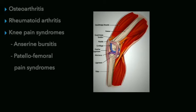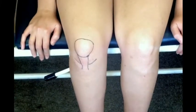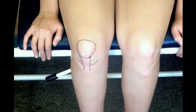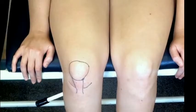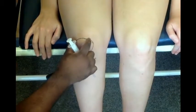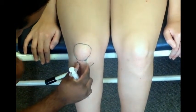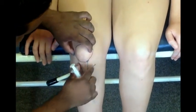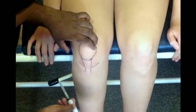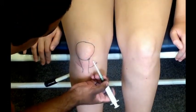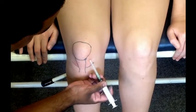Patients frequently present to primary care facilities with knee complaints. Osteoarthritis and rheumatoid arthritis are among the most common, and along with knee pain syndromes, are indications for intra-articular injection. Compared to the other joints, the knee is relatively easy to access and can be approached by two methods. Starting with the patient sitting, you identify your landmarks: the patella, the patella tendon, and the tibial plateau. The injection can be done medially or laterally relative to the patella tendon, with the needle directed towards the intercondylar notch of the femur.